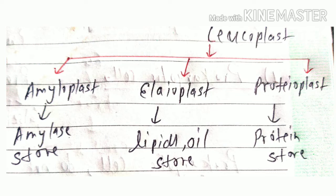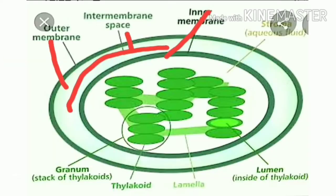Leucoplast is responsible for storage. Based on the storage material, leucoplast can be divided into three types: amyloplast, which stores starch (amylose); elaioplast, which stores lipids and oils; and proteoplast, which stores protein.